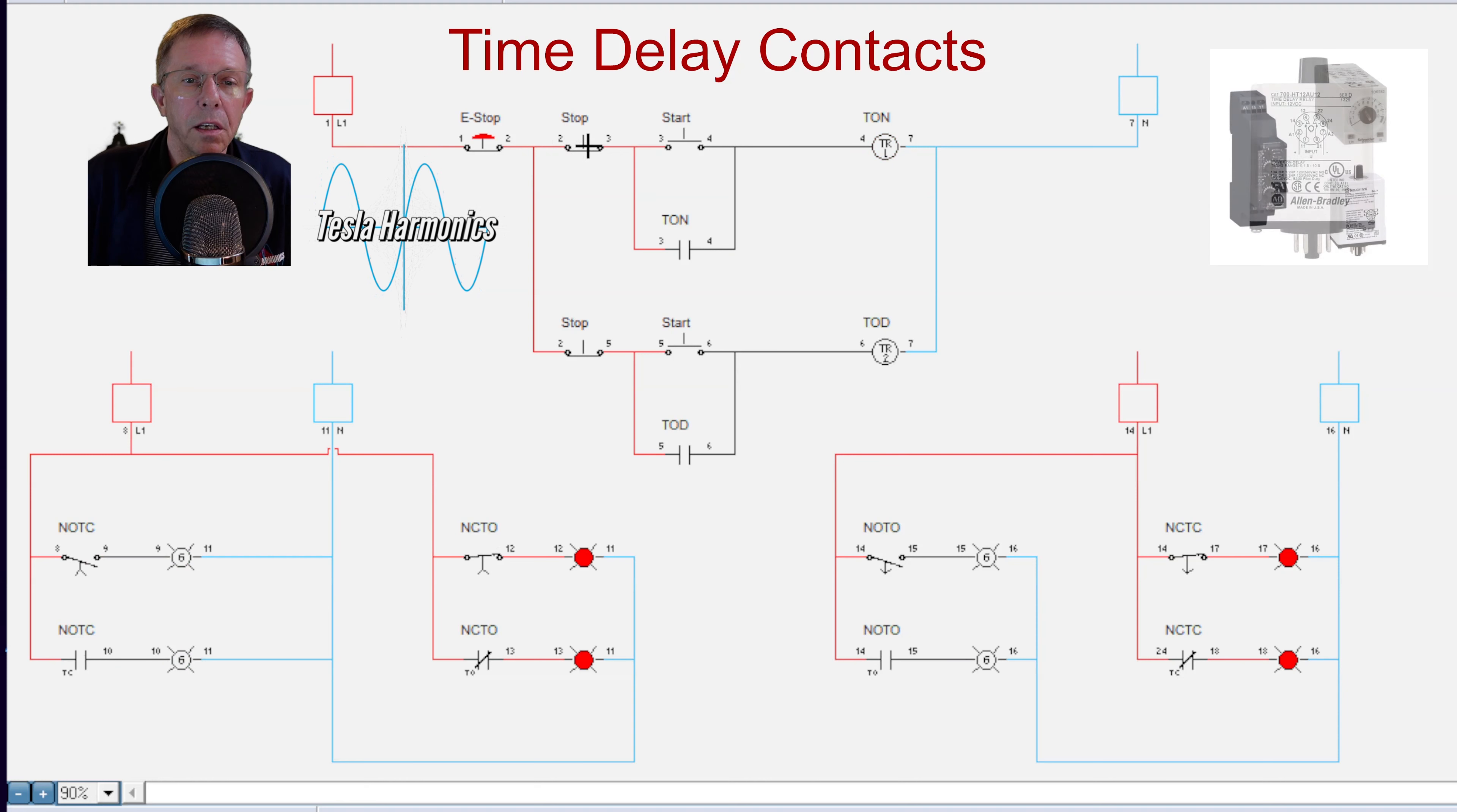an arrow pointing up. That means it's going to time to go up and close, so that's our time on delay. This means the same thing, except I show a normally open contact and I put a small TC by it for time closed.